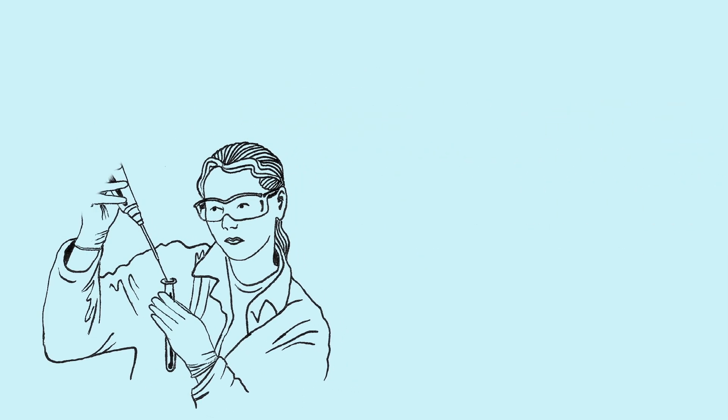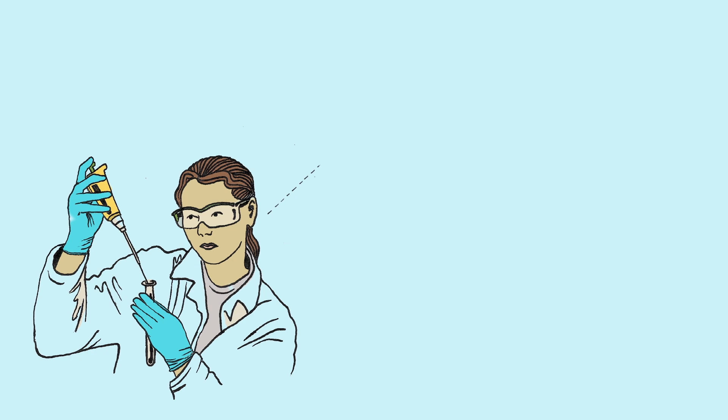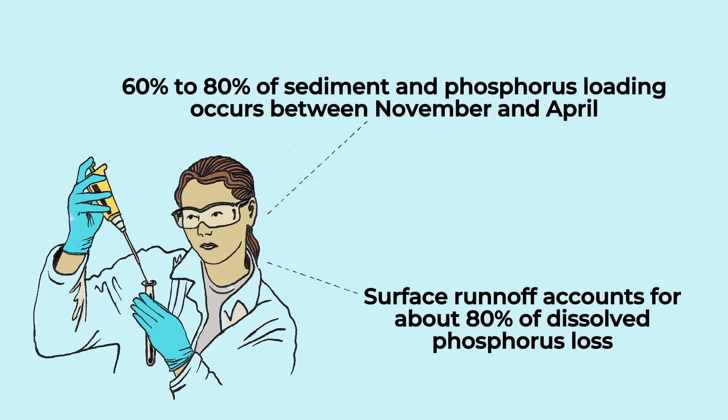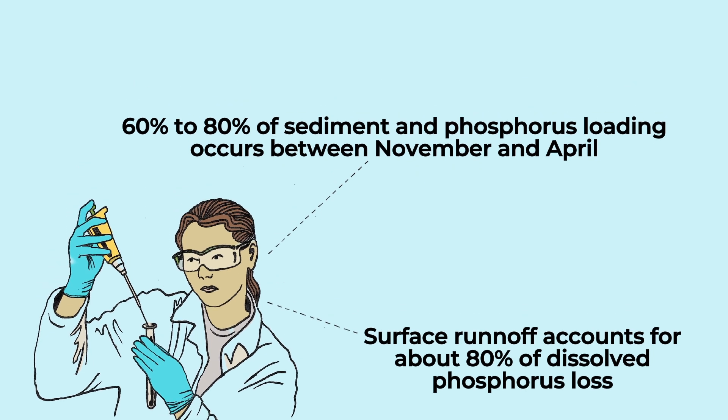But as researchers learn more about how phosphorus moves in the environment, it is now understood that there is a higher risk that nutrients from manure applied on frozen or snow-covered ground can move during the spring thaw.